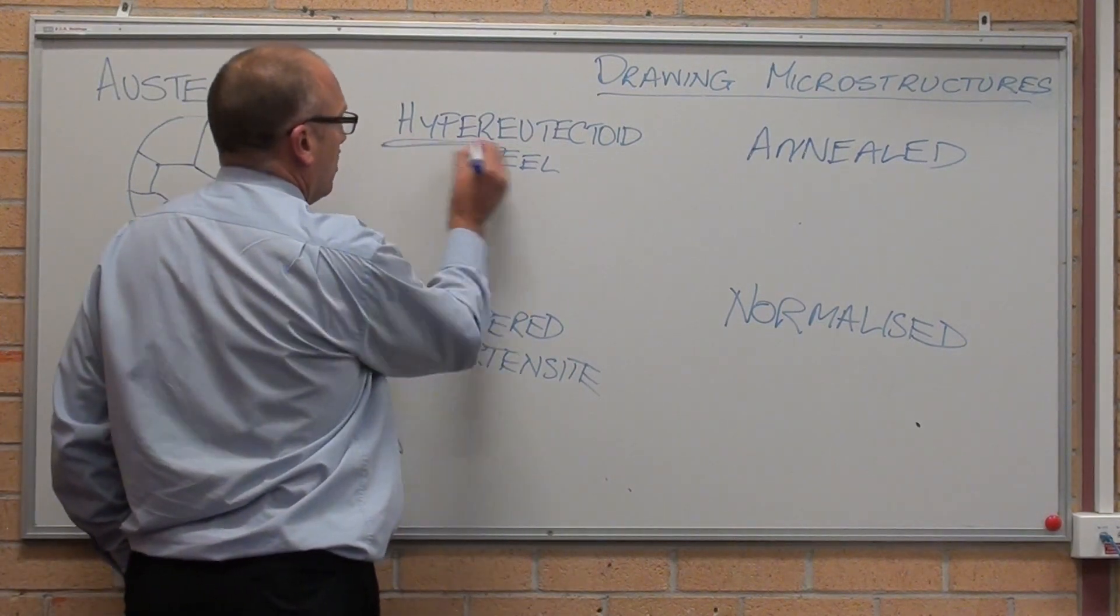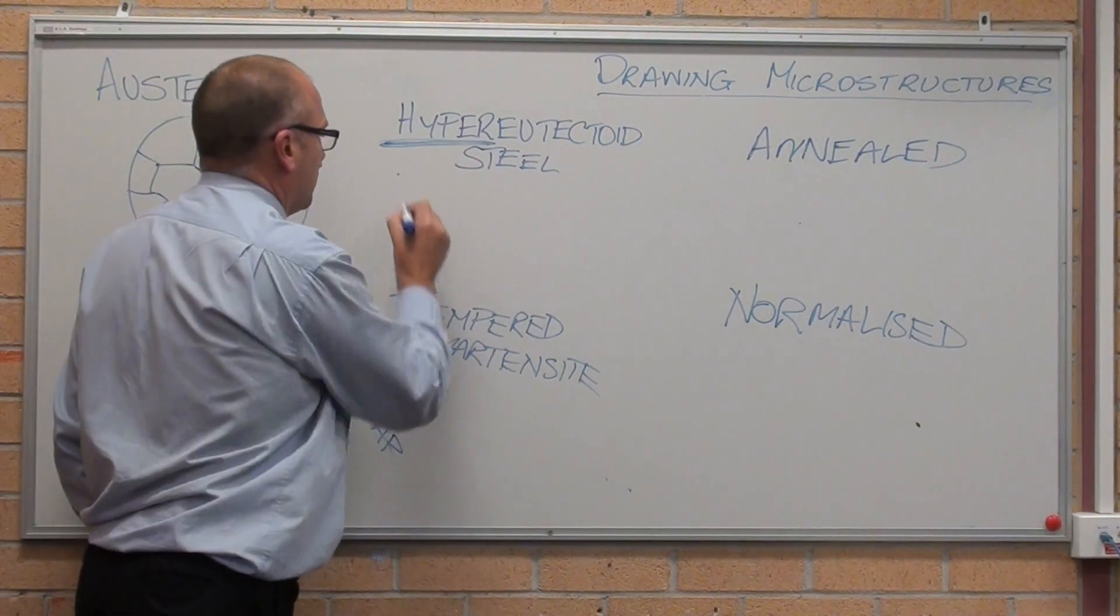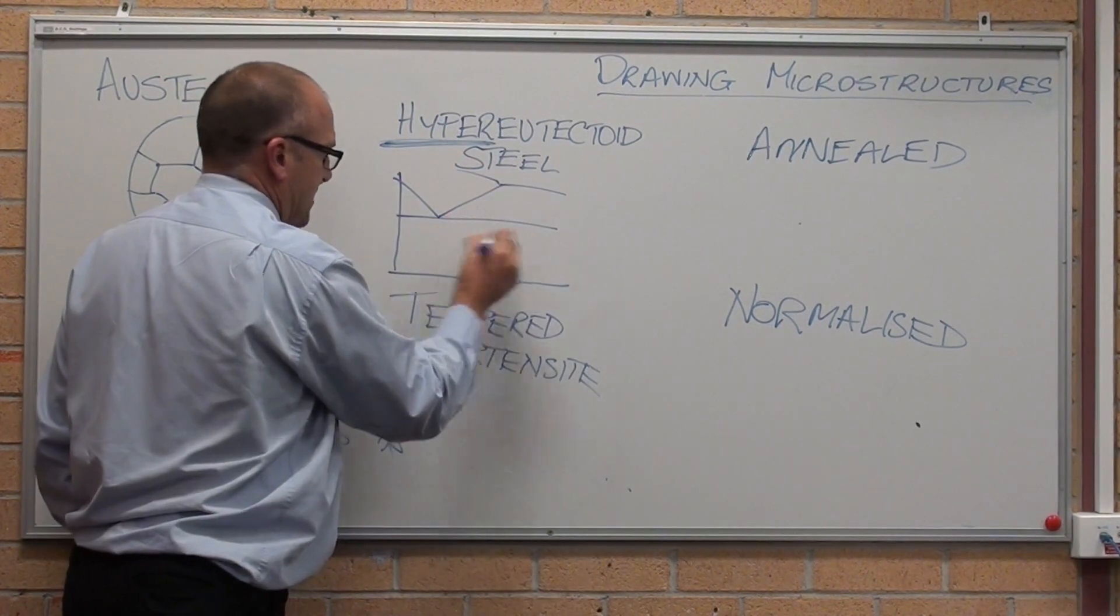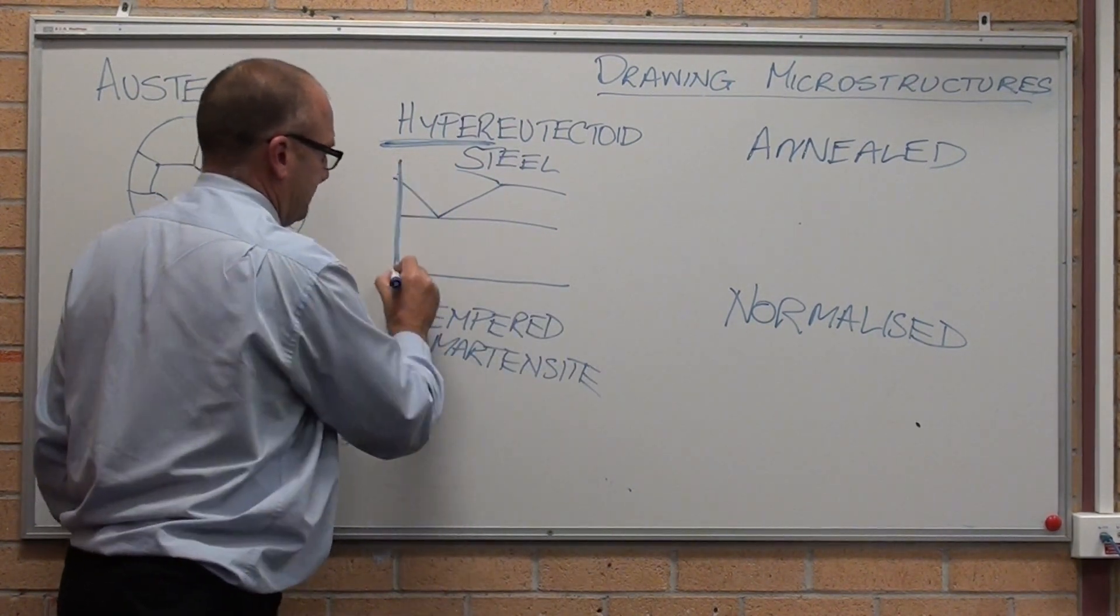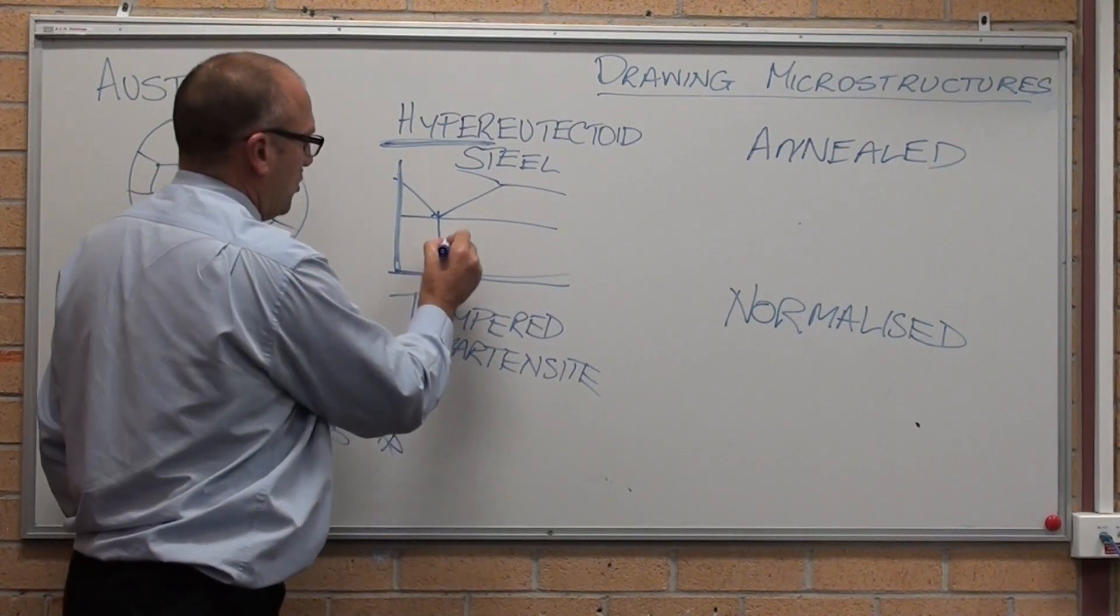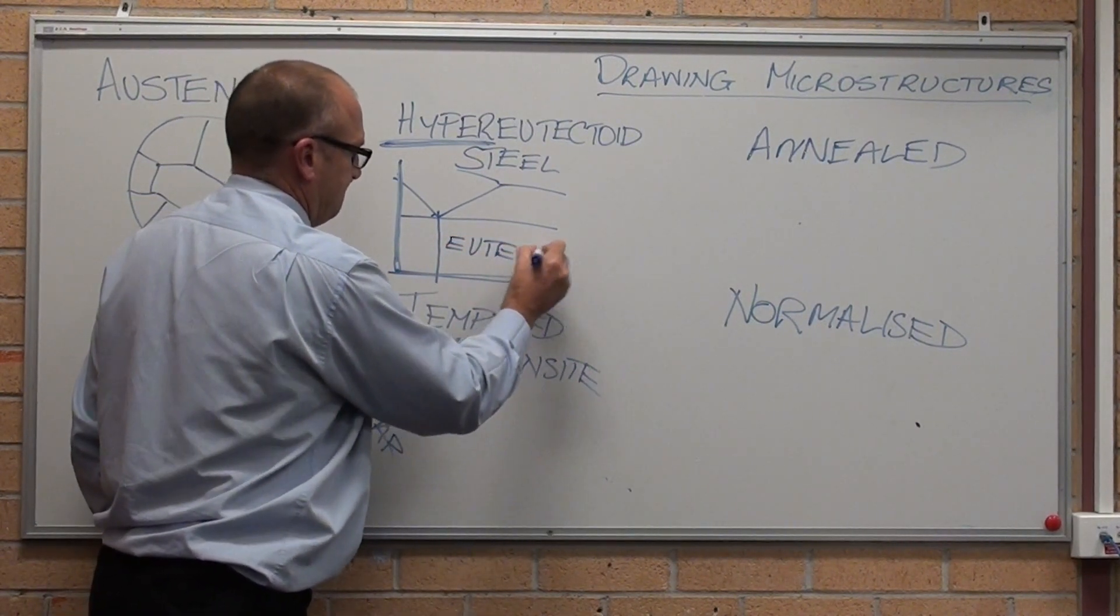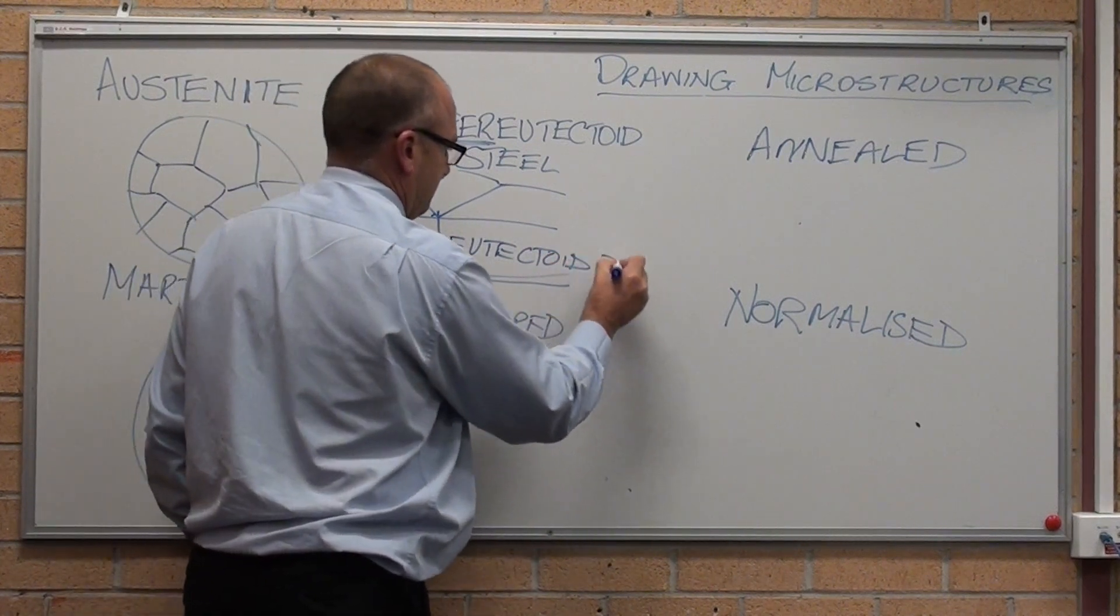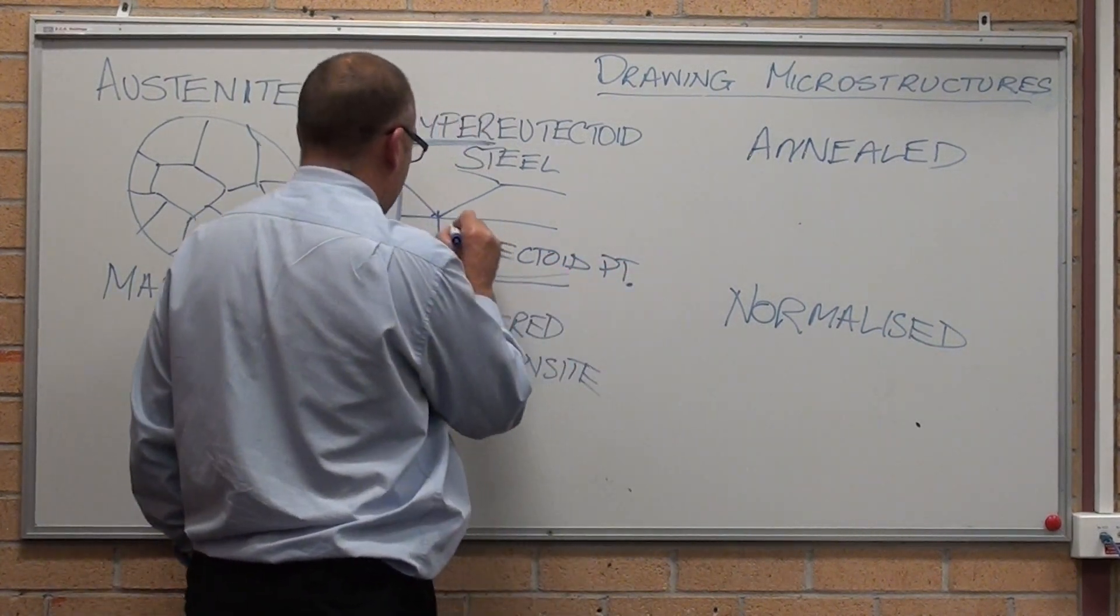Hyper. A hypereutectoid steel. Here's our iron carbon diagram. There's the eutectoid point. It's just there.